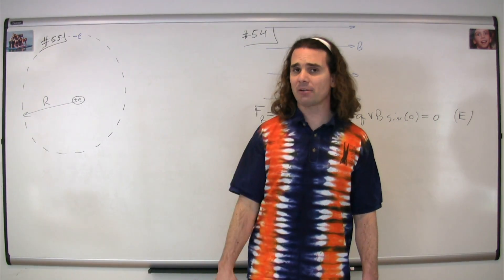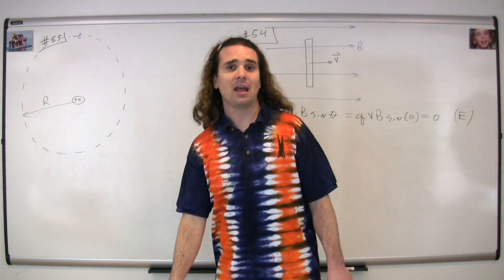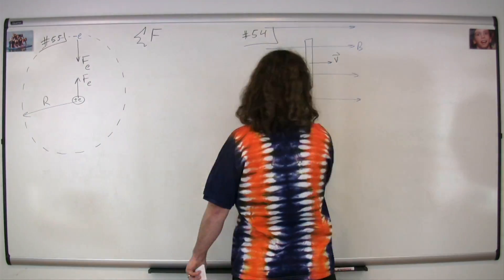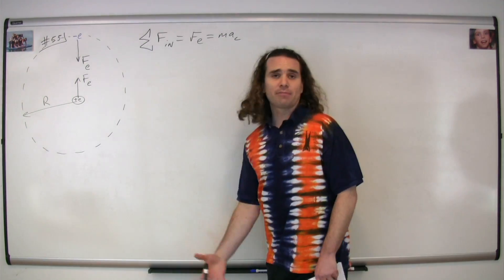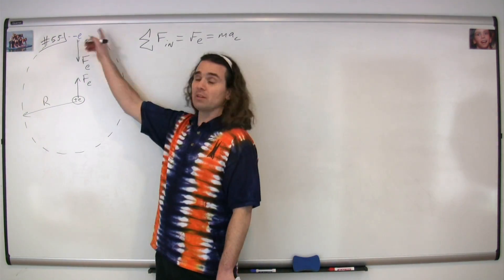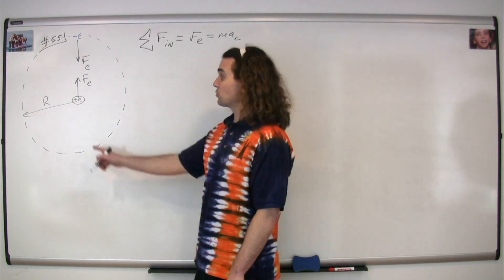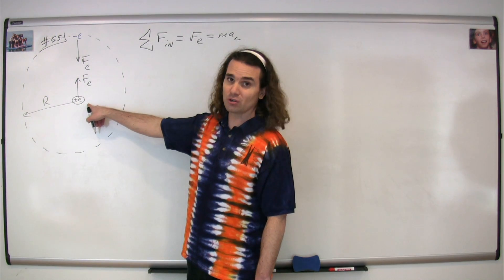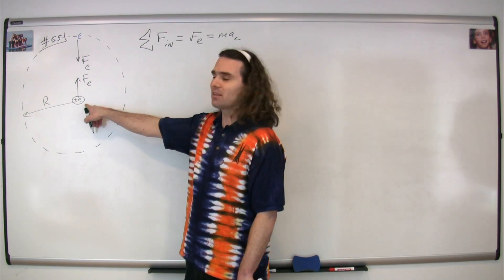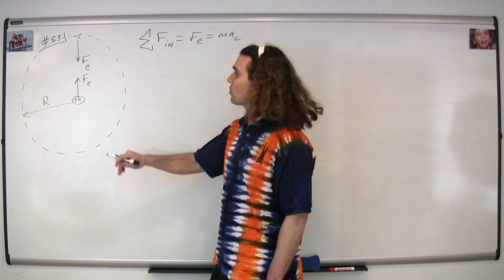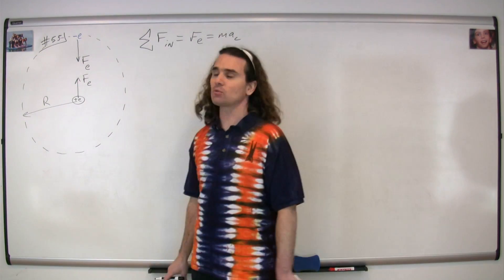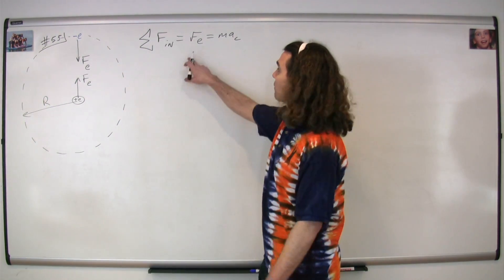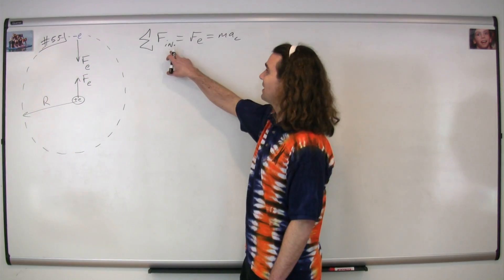We're going to draw a free body diagram of the forces acting on the electron, and then sum the forces in the n-direction. In our free body diagram, we have an electric force — the only force acting on the electron is that electric force toward the proton. There's an equal but opposite Newton's third law pair electric force acting on the proton toward the electron, but we're only summing the forces on the electron, so we're only worried about this electric force. The electric force is inward, therefore it is positive when we sum the forces in the n-direction.